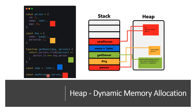In the last line, if you observe, person is an object — we are assigning that to a new reference. It means we have a new person reference pointing to the same object, so two references point to the same object. This is how the heap works — dynamic memory allocations are stored in the heap and their references are stored in the stack.